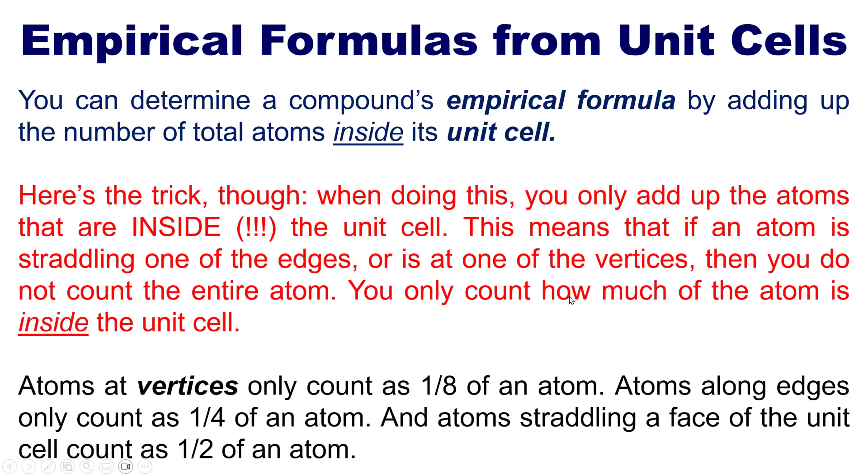Atoms at vertices, that is at corners of a unit cell, only count as 1/8th of the atom because only 1/8th of it is inside the box. Atoms along edges only count as 1/4th, whereas atoms that are straddling a face of the unit cell or cube or box count as 1/2 because that's the amount of that atom that's inside the box. Makes sense, okay?